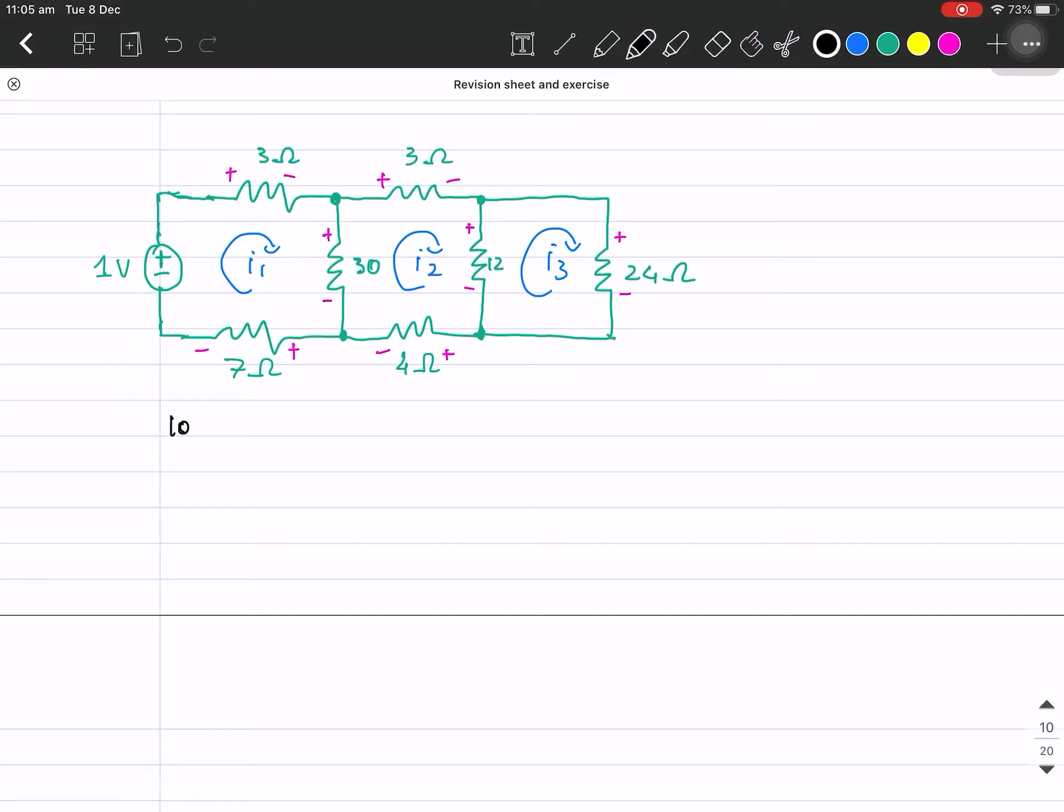Okay, we have Loop 1, which is negative 3i1. Oh I forgot to label this one, I'm doing it now. This one is 30(i1 - i2), and this one is 12(i2 - i3).